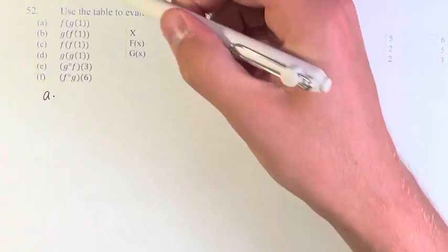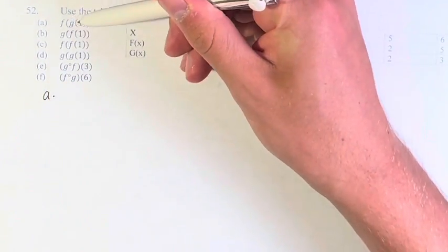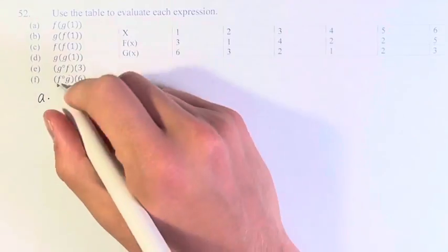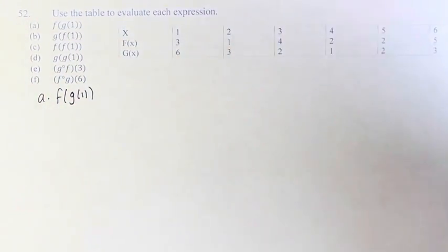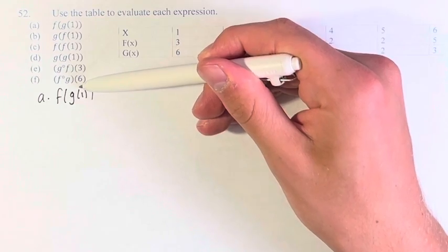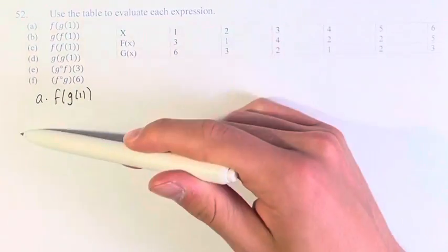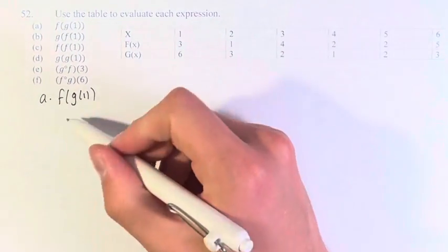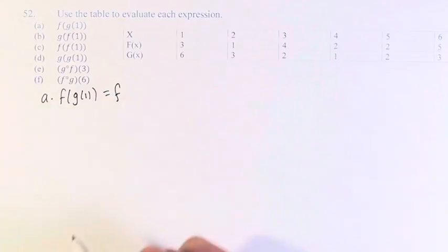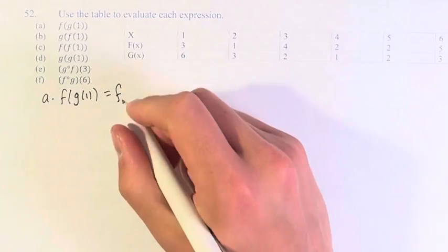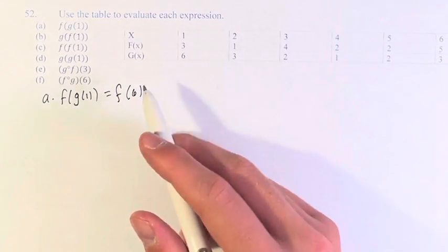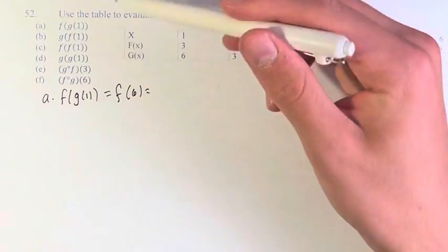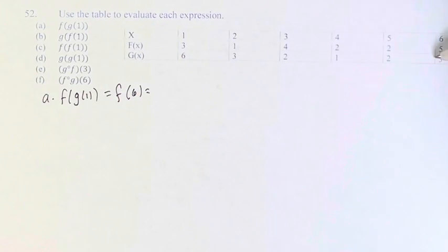So for part a, we have f of g of 1. The first step is to find g of 1 — we find what's inside, and then we work our way outwards. g of 1 is 6, so this is equivalent to f of 6. And now we go to 6 to see what f of 6 is, and we get 5.